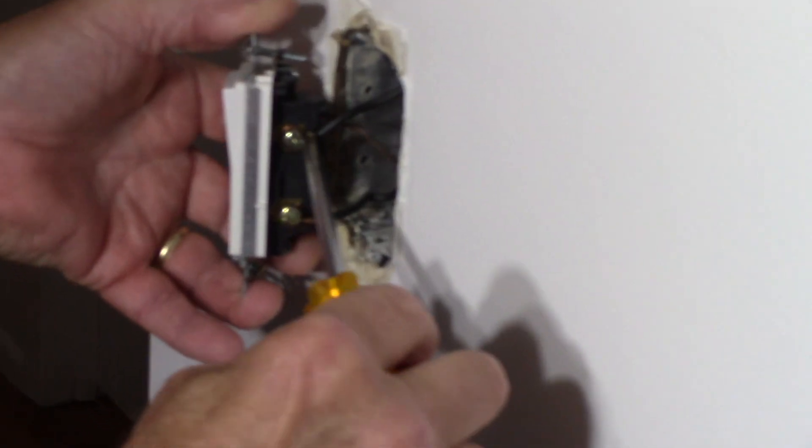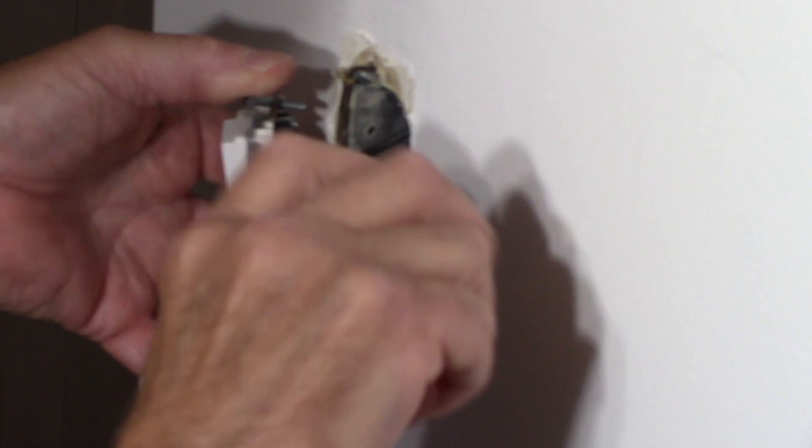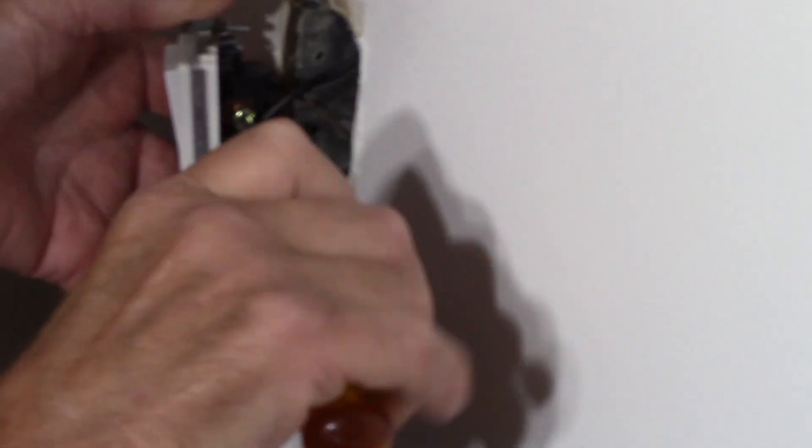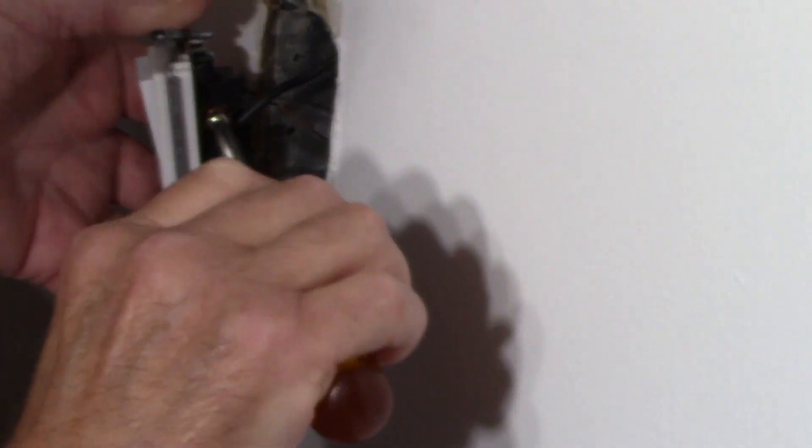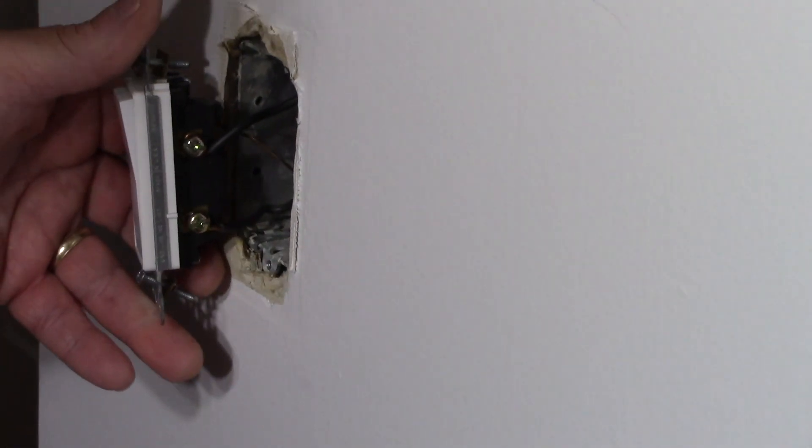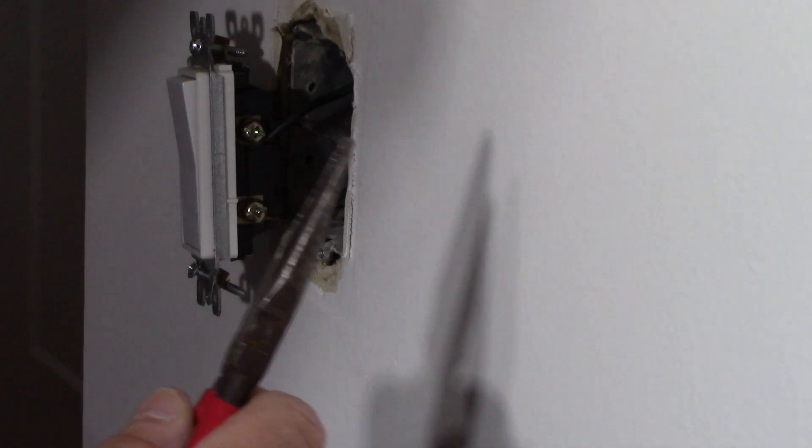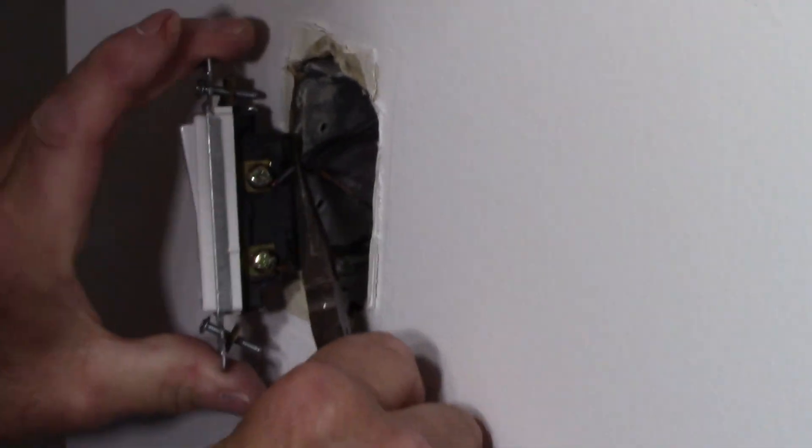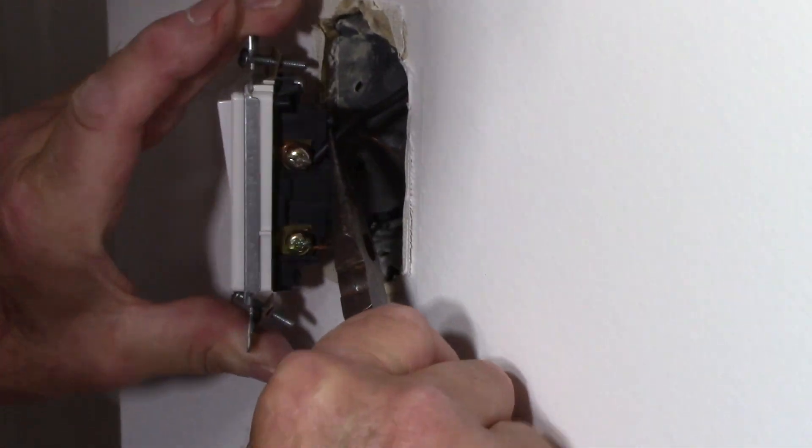We're going to do the same thing on this one right here. And then we'll take these two wires off right here. Sometimes it comes in handy having needle nose pliers because you can hold the wire and just pull it off like that.